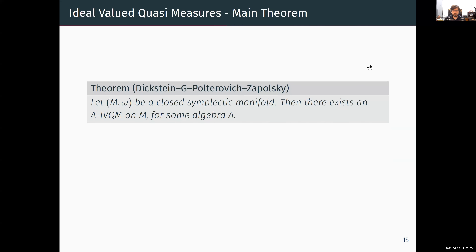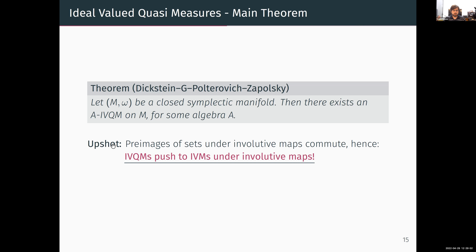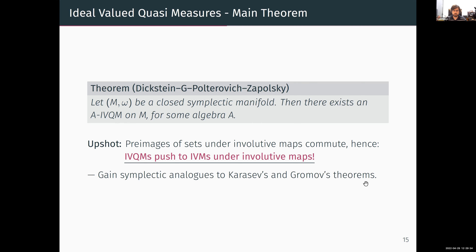Our main theorem is that every closed symplectic manifold has an IVQM on it for some algebra — secretly the quantum cohomology algebra of the manifold. The key consequence is that preimages of sets under involutive maps commute, due to the definition of involutive maps. So if I apply the push-forward construction to IVQMs, I get an IVM. If I have an involutive map and an IVQM on my symplectic manifold, I can push it forward and get an IVM on the base, and from there apply the center point theorems to get new results — symplectic analogs of Karasov's theorem and Gromov's theorem.